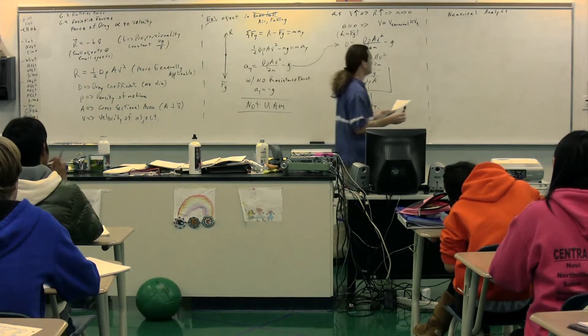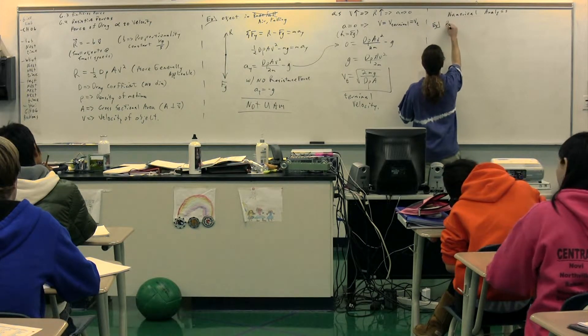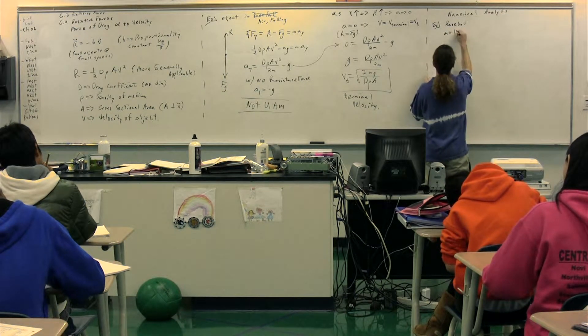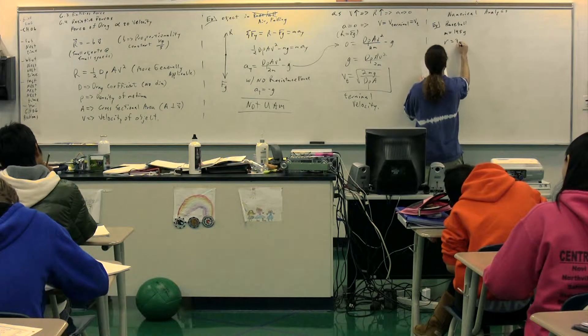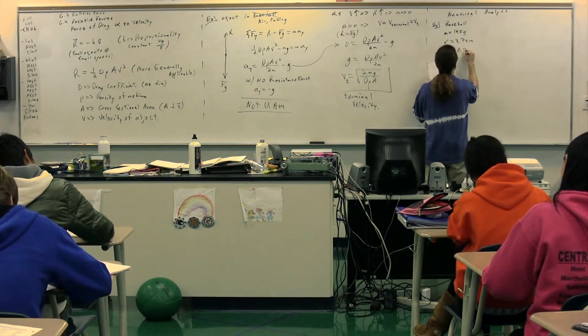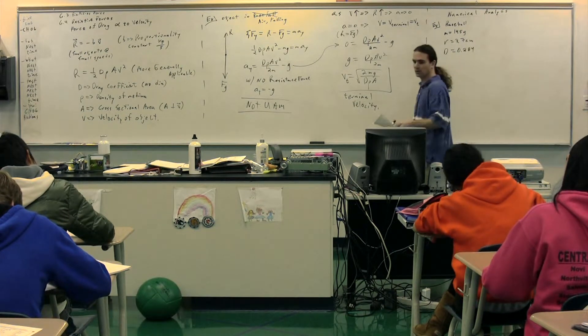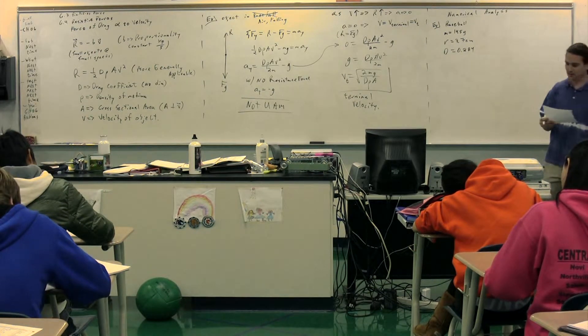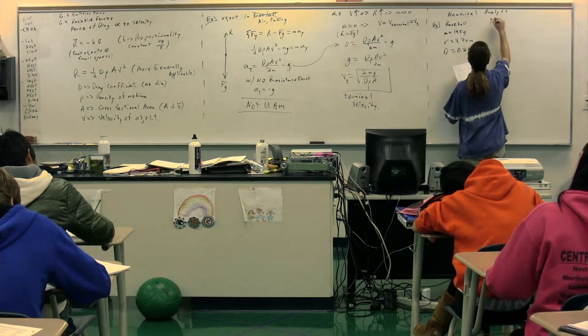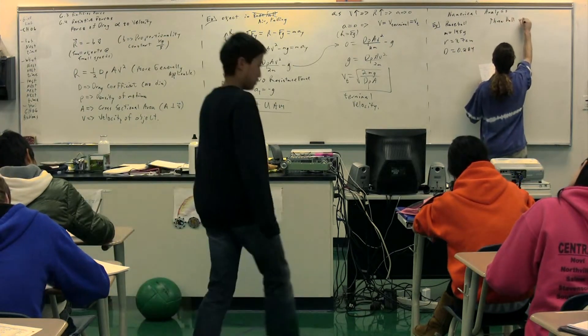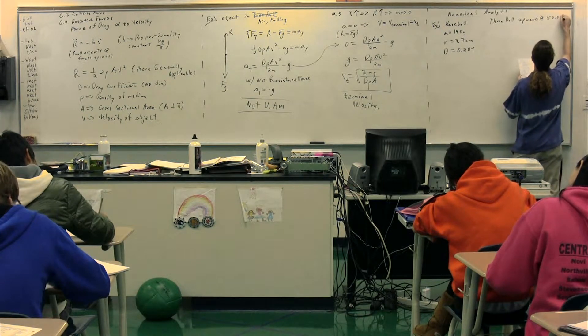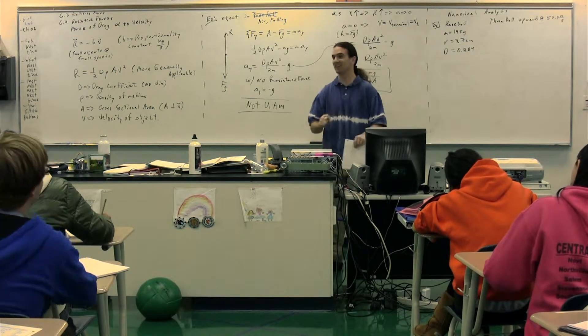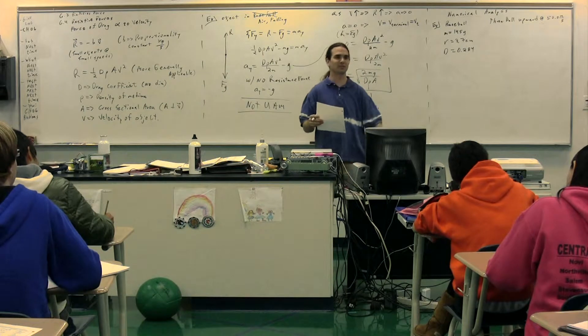So what we're going to do is we're going to take a baseball. A baseball, and these are real numbers, has a mass of 145 grams, has a radius of 3.7 centimeters, and it has a drag coefficient of 0.284. Again, you can look up all sorts of stuff about baseballs. Those are real numbers. We are going to throw the ball upward at 50.0 meters per second. Just so you know, this is 112 miles an hour. That's very fast, but it's a good round number for us to work with.